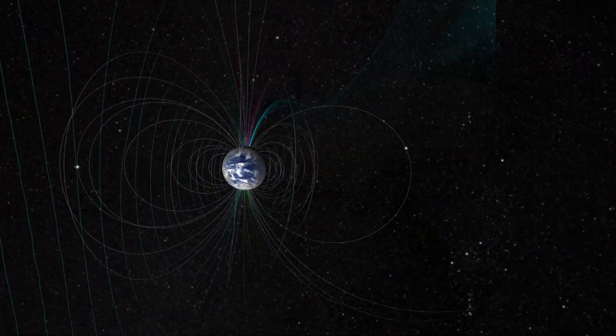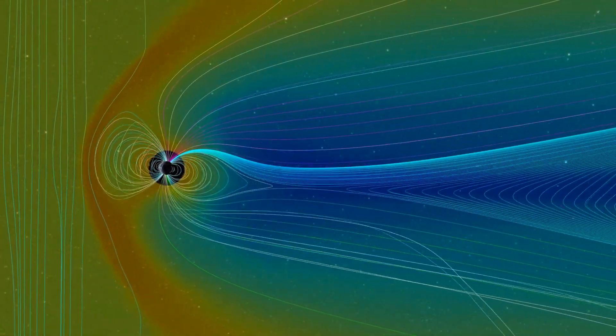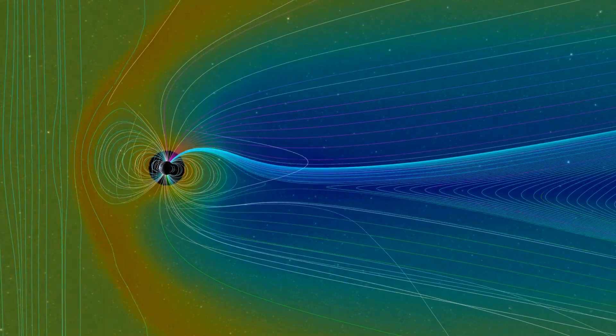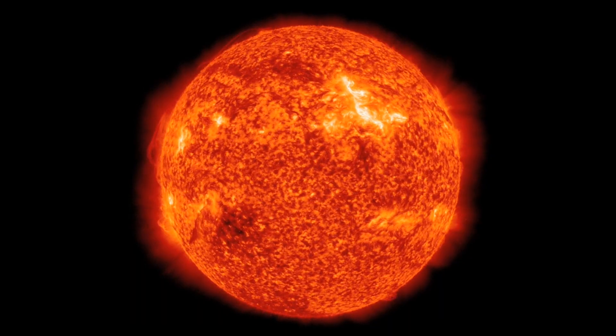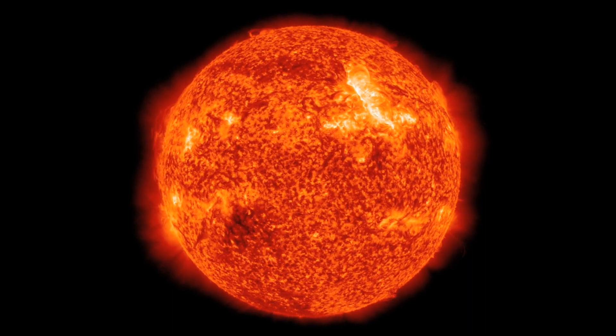Solar flares are sudden and brief bursts of intense energy from the Sun's surface that release a significant amount of radiation across the electromagnetic spectrum, including X-rays and ultraviolet light. This energy burst is caused by the release of magnetic energy stored in the Sun's atmosphere.